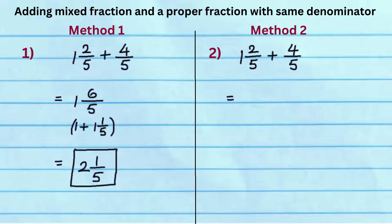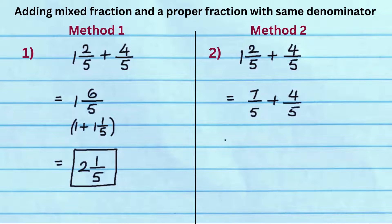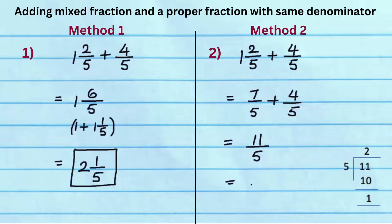In method 2, convert mixed fraction 1 and 2 fifths to improper fraction 7 by 5, and add 4 by 5 to it. Add numerators 7 and 4 to get 11, and write denominator as 5. Since 11 by 5 is an improper fraction, simplify it to get 2 and 1 fifths.